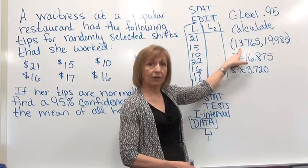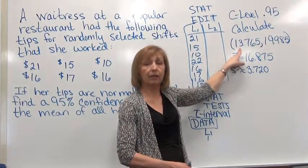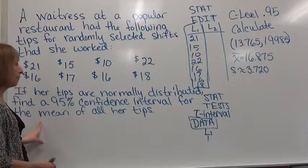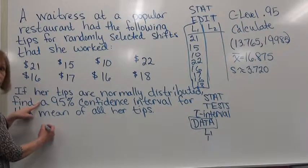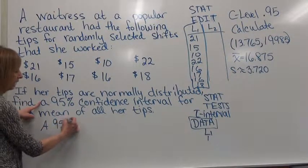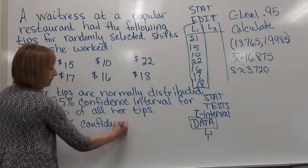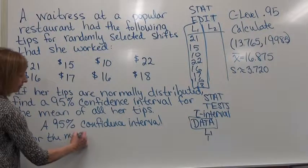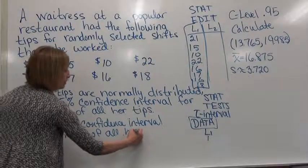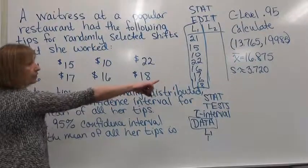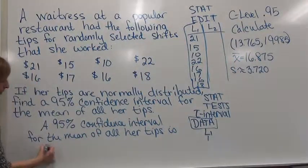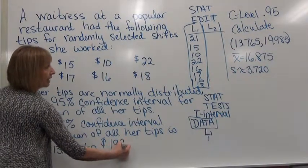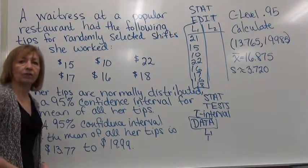Now it's important to write our answers out in a sentence form so that when we're giving information to other people, it makes sense to the wording of the original question. So remember, we were to find a 95% confidence interval for the mean of all her tips. So to write our sentence, we'll start with what they asked us to do. So we'll just say a 95% confidence interval for the mean of all her tips is, we're going to do the low end of our interval, and remember our units is money. So $13.77 to $19.99. And that is our confidence interval that answers the question asked in this problem.